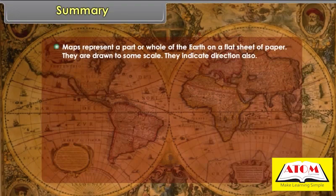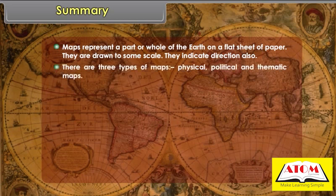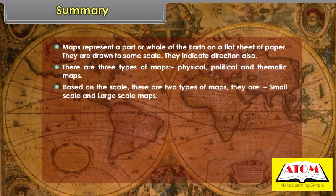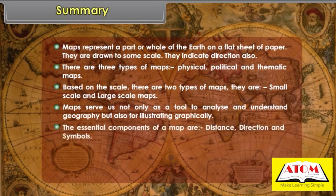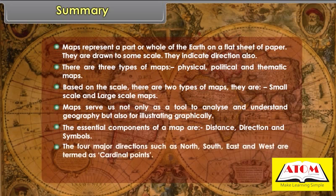Summary: Maps represent a part or whole of the earth on a flat sheet of paper, drawn to some scale, and indicate direction. There are three types of maps: physical, political, and thematic. Based on scale, there are two types: small scale and large scale maps. Maps serve as a tool to analyze and understand geography and for illustrating graphically. The essential components of a map are distance, direction, and symbols. The four major directions — north, south, east, and west — are termed as cardinal points.